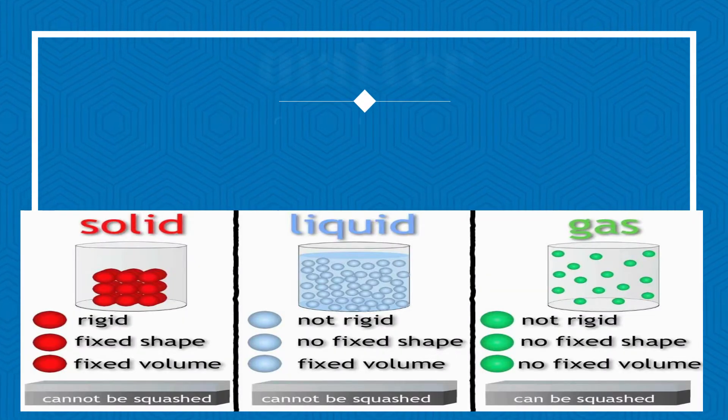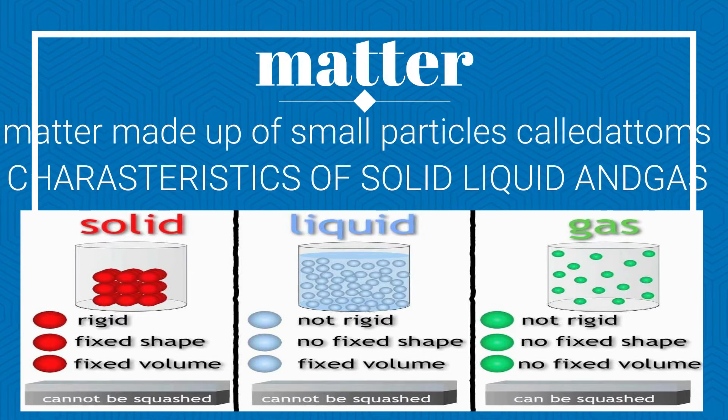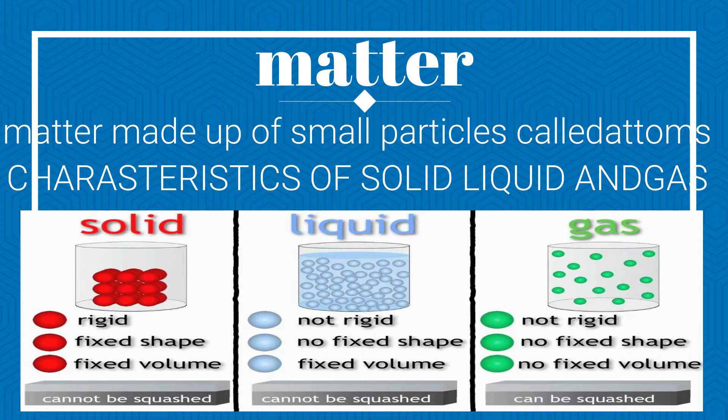Let's talk about matter. Matter is made up of small particles called atoms. Characteristics of solid, liquid and gas according to the arrangement of atoms. Solid: rigid, fixed shape, fixed volume, cannot be compressed.